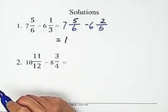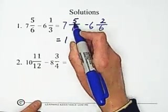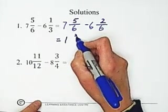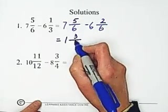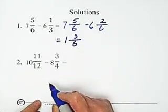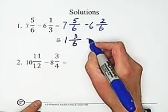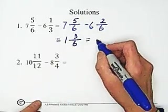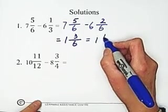7 minus 6 equals 1. And numerator, 5 minus 2 equals 3. Keep the denominator unchanged. 3 and 6, we can simplify, get 1 and 1 over 2.